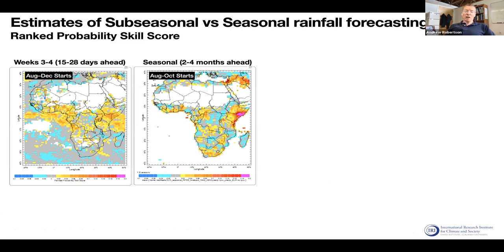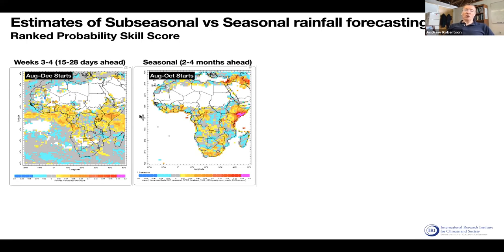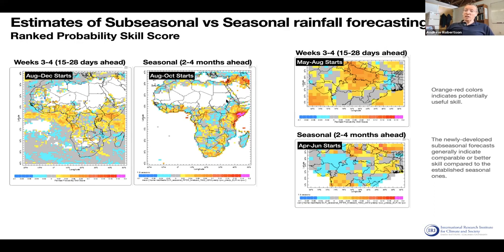How does sub-seasonal skill compare to IRI's seasonal forecast skill? For the August-to-December period, looking at RPSS, the skill at weeks three and four is fairly comparable to what we get in seasonal forecasts. This is encouraging — S2S is a new field and already shows similar skill to seasonal forecasting after many years of development. Over India, the seasonal forecasts show basically no skill in this period, whereas we can see some skill in the week three to four range.